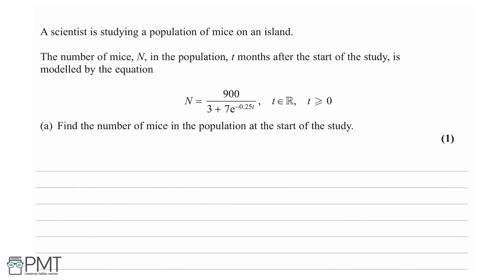A scientist is studying a population of mice on an island. The number of mice n in the population, t months after the start of the study, is modelled by the equation n equals 900 over (3 plus 7e to the power of minus 0.25t), where t is a real number and t is greater than or equal to 0.